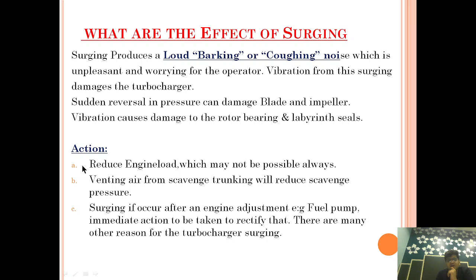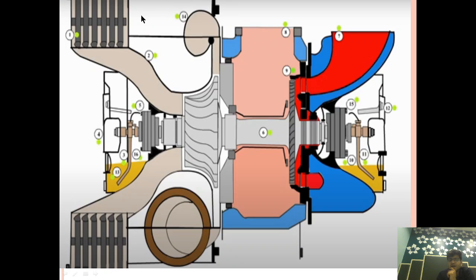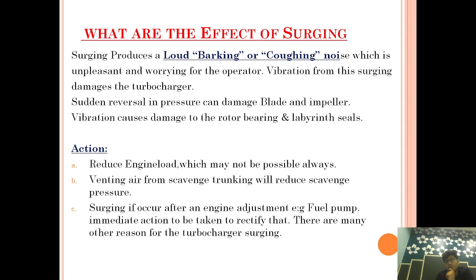So what action can we take? If surging occurs, and if it is permitted, we can reduce the engine load. It may happen that we can't always reduce the engine load — for example, during a maneuvering scenario where control is on the bridge. Venting air from the scavenged trunking will reduce the scavenged pressure. If we reduce the scavenged pressure, the surging will stop, but doing this takes time and surging will continue in the meantime.